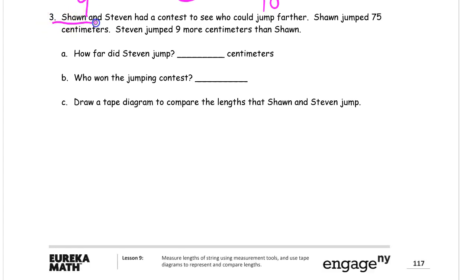And then our last one, number 3. Sean and Steven had a contest to see who could jump farther. Sean jumped 75 centimeters. Steven jumped 9 more centimeters than Sean. He didn't jump 9. He jumped 9 more. So how far did Steven jump? And who won the jumping contest? And then finally, it says here, draw a tape diagram. So this is a word problem. We're going to have to RDW this. And sometimes this is one of those times where it really helps to read the whole thing and all the questions in the beginning. Because it's going to save you some work if you do that. You know right from the beginning, you're going to have to draw a tape diagram anyway. So you may as well draw the tape diagram to help you figure it out first. Although C comes last, we're going to do it first.